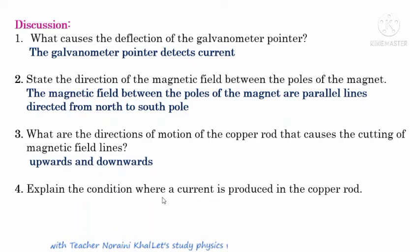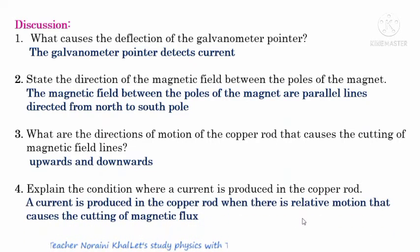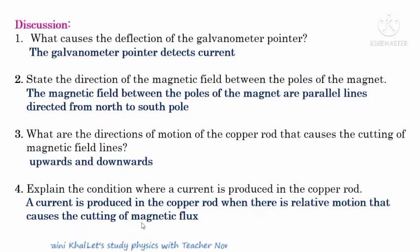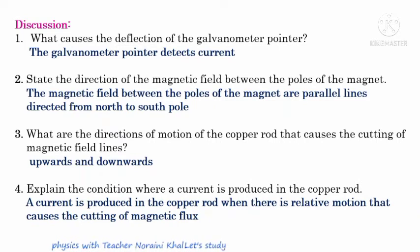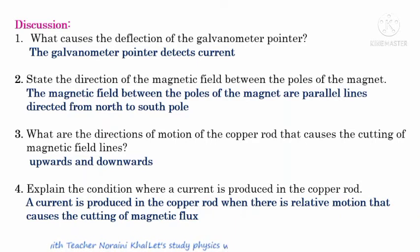A current is produced in the copper rod when there is relative motion that causes the cutting of magnetic flux. When the rod is moved upwards and downwards, there is cutting of magnetic flux. When moved parallel with the magnetic field lines, there is no cutting of magnetic flux and no current flows.